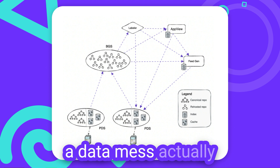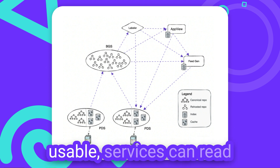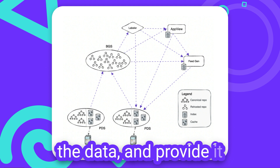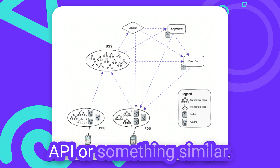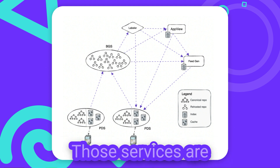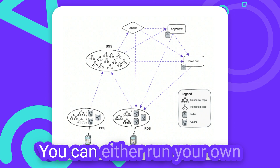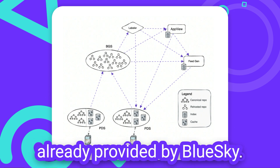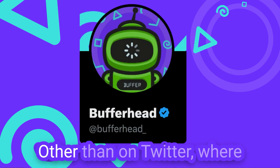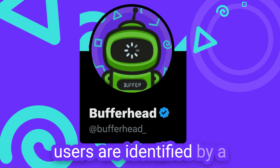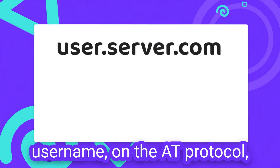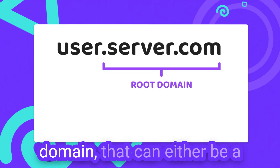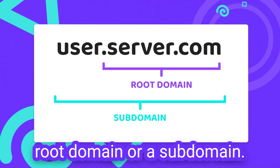To make the stream of data mesh actually usable, services can read the stream, aggregate the data, and provide it in the form of a REST API or something similar. Those services are called AppViews. You can either run your own one or use the one already provided by BlueSky. Unlike Twitter, where users are identified by a username, on the AT protocol users are identified by a domain — either a root domain or a subdomain.